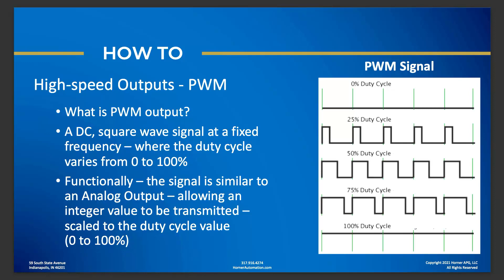Functionally, a PWM output can act very similarly to how an analog output signal works. An analog output typically sends 4 to 20 milliamps or 0 to 10 volts, and through that output the receiving device can scale that signal to replicate an integer value. With PWM, instead of a 4 to 20 milliamp or 0 to 10 volt output, we're talking about a pulse train where the receiving device measures the duty cycle and replicates an integer value based on where that duty cycle falls between 0 and 100 percent. So PWM can effectively act similarly to an analog signal in terms of how you use it.